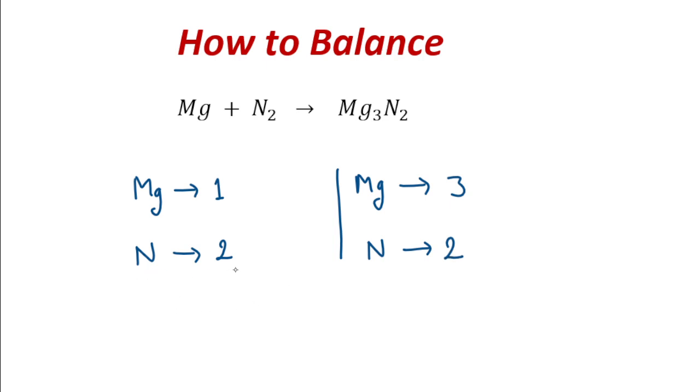Now, see in reactant side we have nitrogen 2 and product side we have nitrogen 2. What we need to do? We just multiply it by 3. It gives 3.